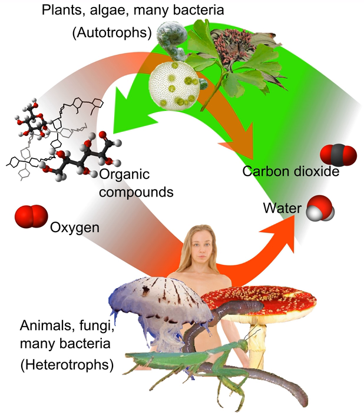Many heterotrophs are chemo-organo-heterotrophs that use organic carbon as their carbon source and organic chemicals as their energy and electron sources. Heterotrophs function as consumers in the food chain, obtaining these nutrients through saprotrophic, parasitic, or holozoic nutrition. They break down complex organic compounds — e.g., carbohydrates, fats, and proteins produced by autotrophs — into simpler compounds, e.g., carbohydrates into glucose, fats into fatty acids and glycerol, and proteins into amino acids.